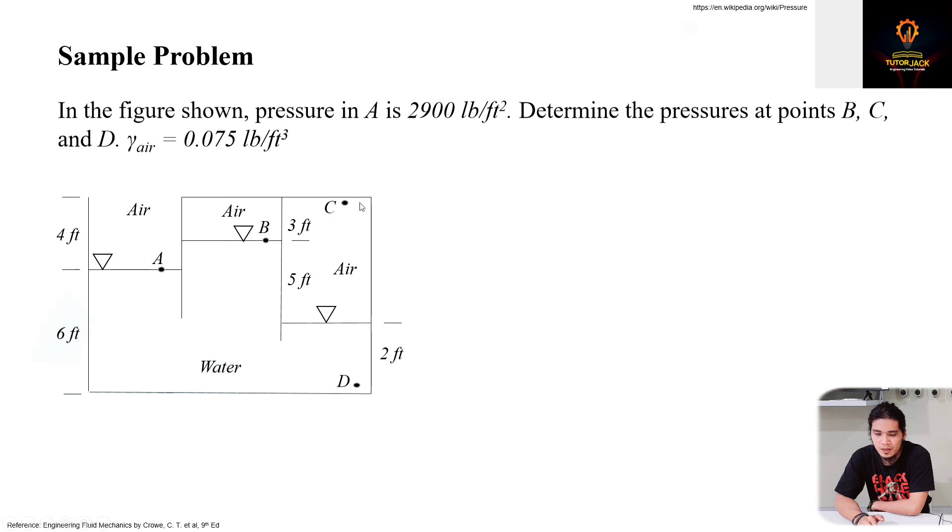So these are points A, B, C, and D. Air is in this portion and then this portion, and then this one is composed of water.